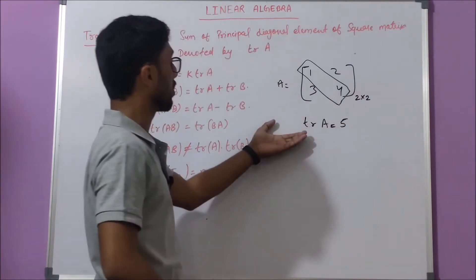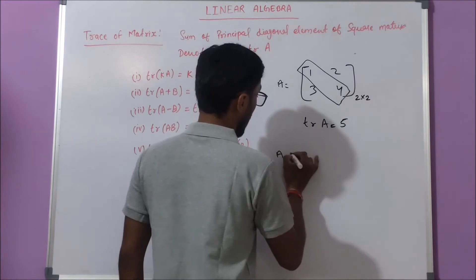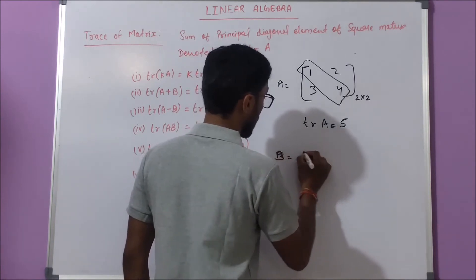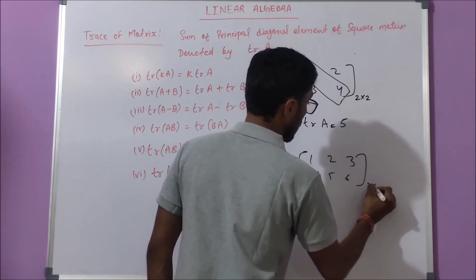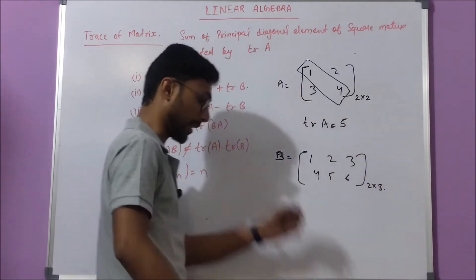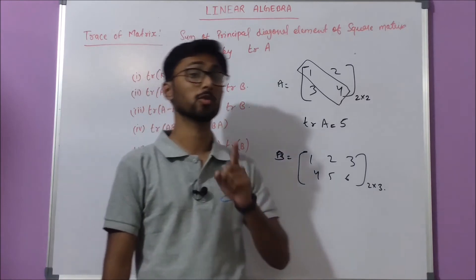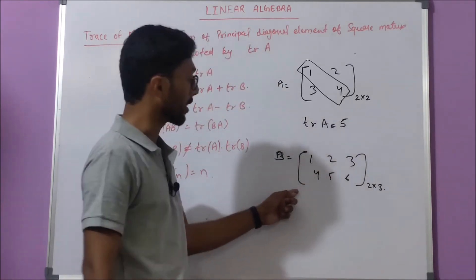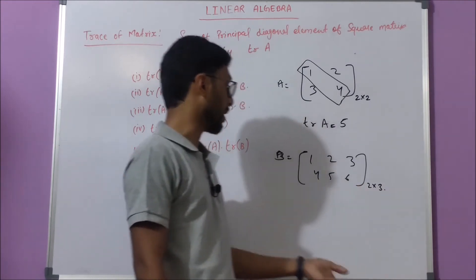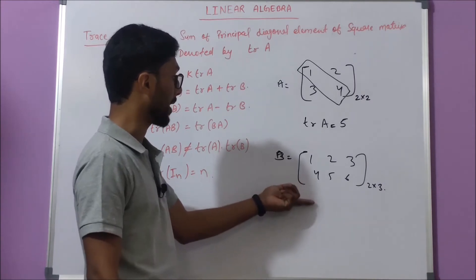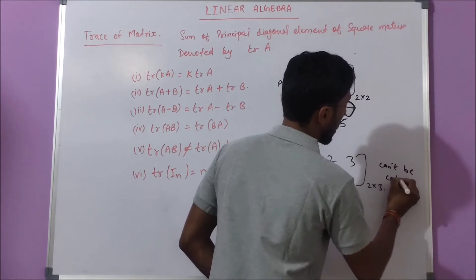Let's take one more example. Matrix B is given as [1 2 3 / 4 5 6]. What is the trace of this matrix? The trace is the sum of principal diagonal elements of a square matrix, but this is not a square matrix because the number of rows and columns are not the same. That's why we cannot find the trace of this matrix — it can't be calculated.